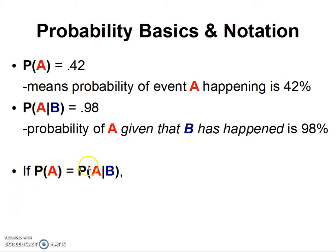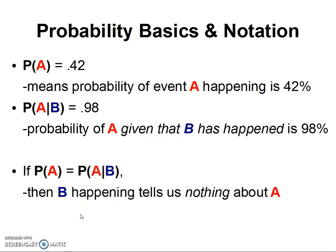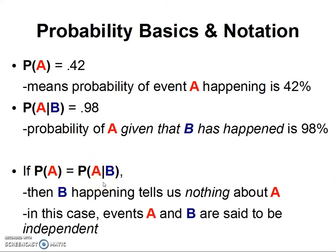What happens when P(A) equals P(A|B)? B tells us nothing about A. It doesn't matter whether or not B happened; the probability of A isn't affected by B. In this case, events A and B are said to be independent—they do not influence one another when this condition holds.